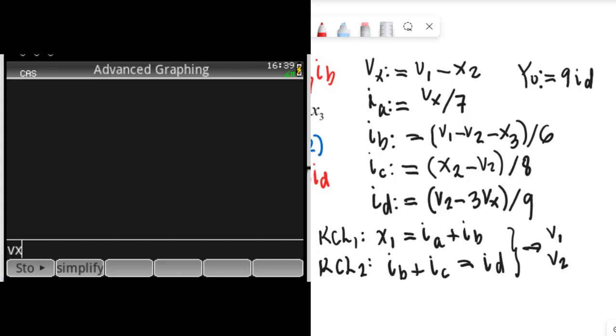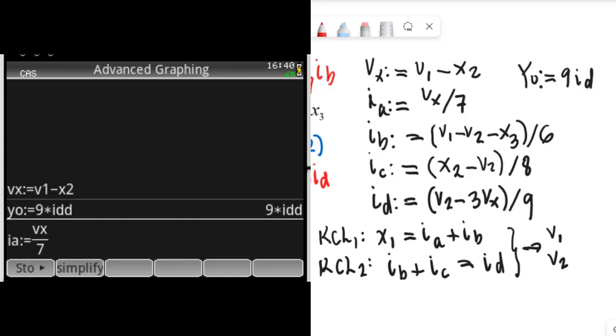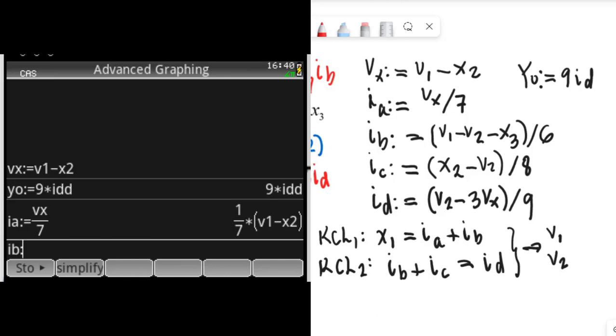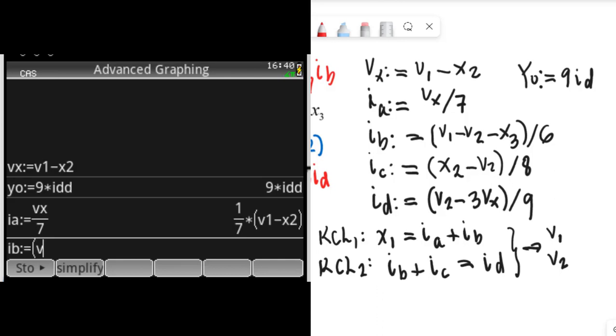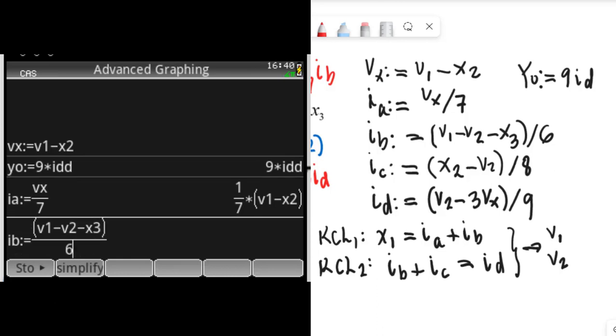Let's begin defining Vx as V1 minus X2. Let's define Y0 as 9 times Id. And Ia is Vx divided by 7. Ib is V1 minus V2 minus X3 divided by 6.